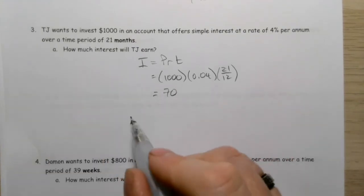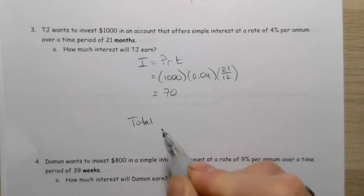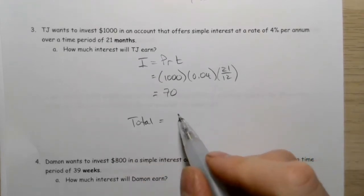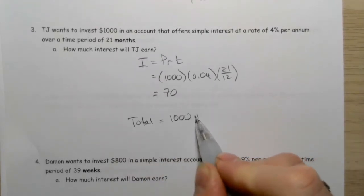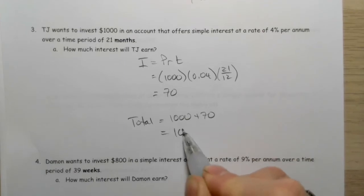The question doesn't ask for it, but the total he's going to have at that 21-month mark is $1,000 plus that extra $70, so $1,070 total.